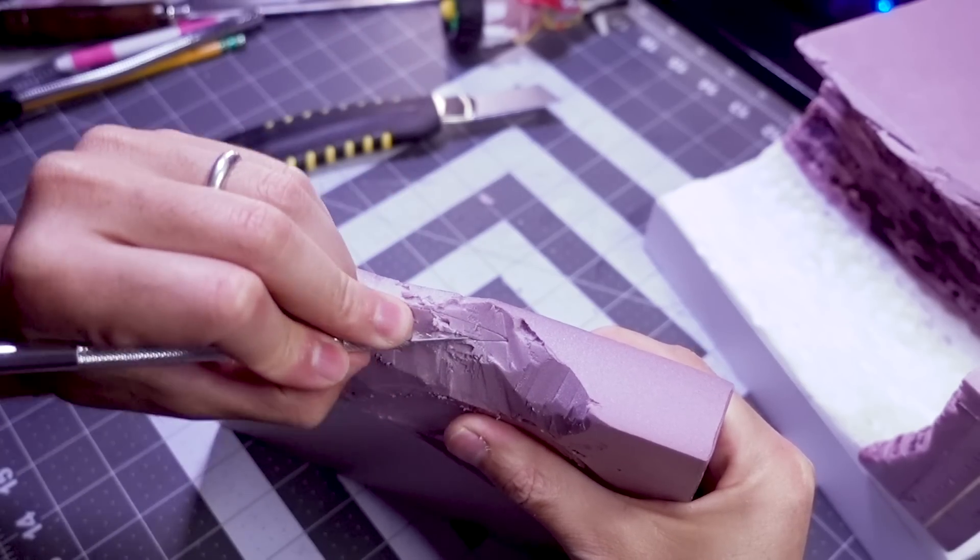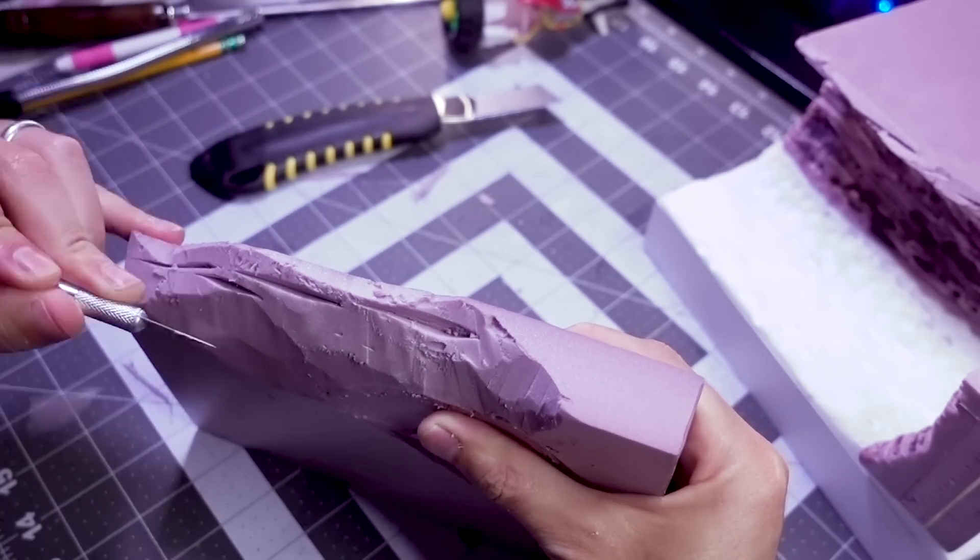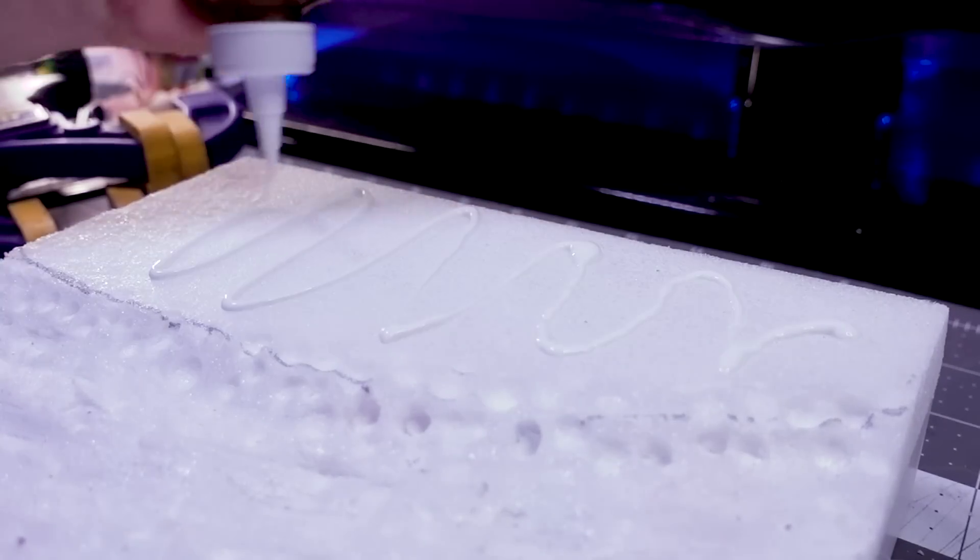The cave roof came last, just another block of XPS foam carved to match the shape of the rest of the cave walls, and then I blasted it with heat. Then, using this tacky glue, I put all the layers together.